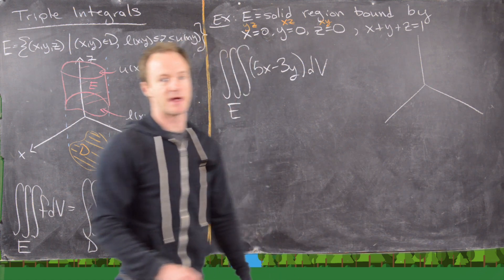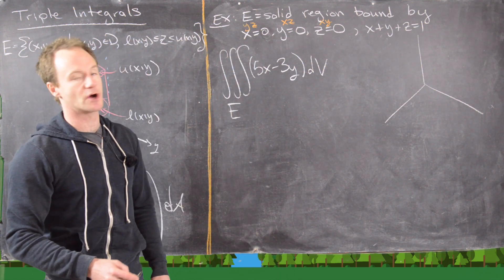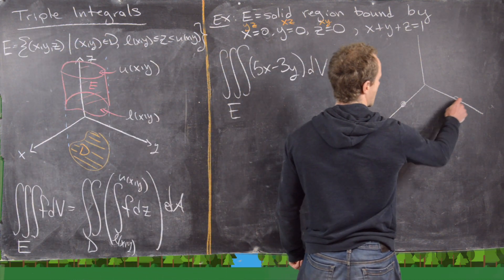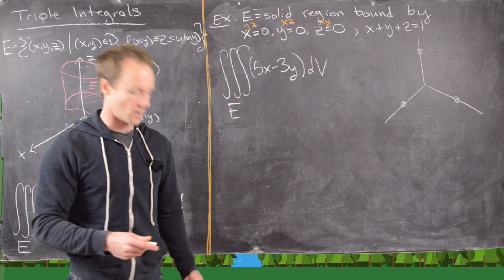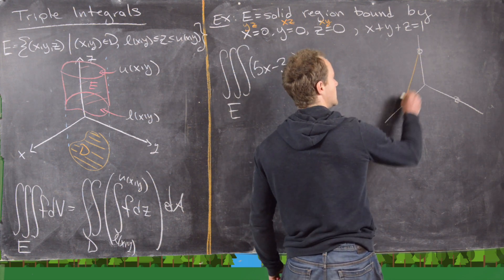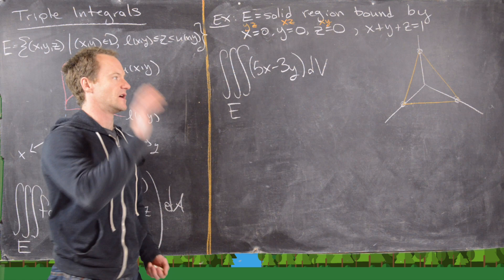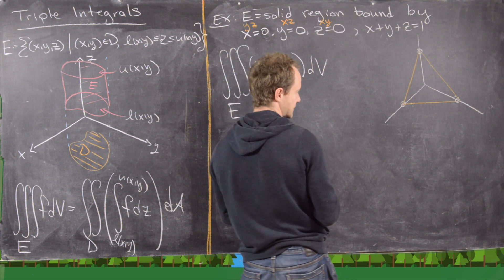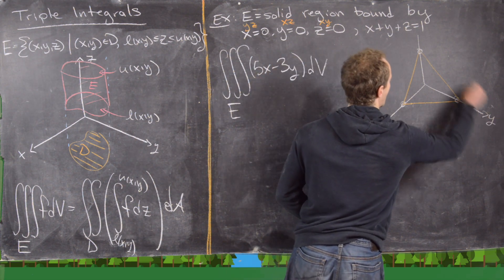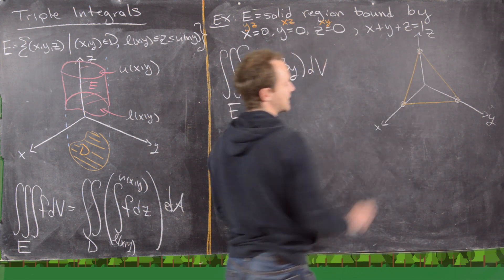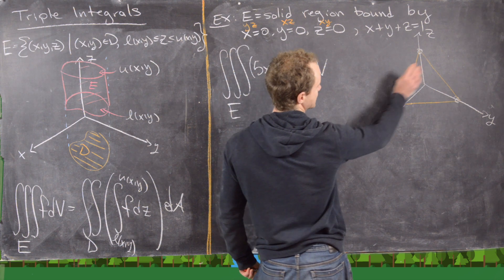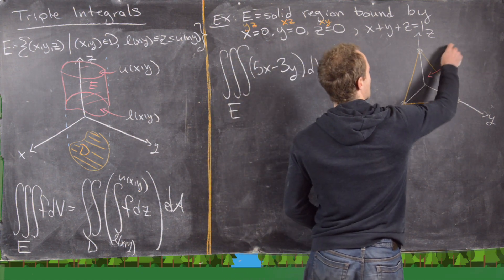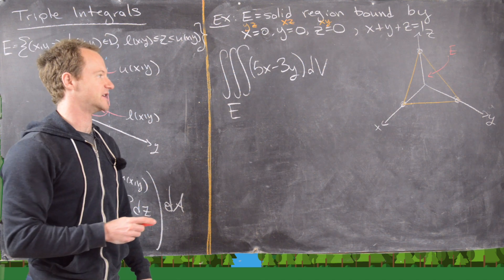Notice x plus y plus z equals 1 is going to go through the coordinate axes at distance 1 from the origin. So all of these points: (1,0,0), (0,1,0), and (0,0,1). We're going to be left with this triangular region kind of propped up on top of these three planes. Down here is the plane z equals 0, over here is the plane y equals 0, and back here is the plane x equals 0. So our region E is, in fact, inside of this — it's like a solid tetrahedron.